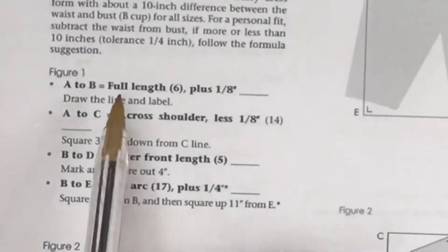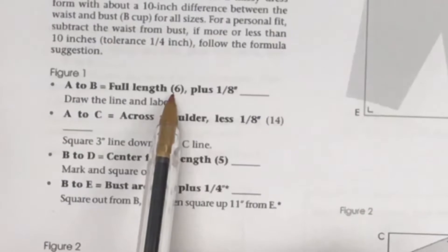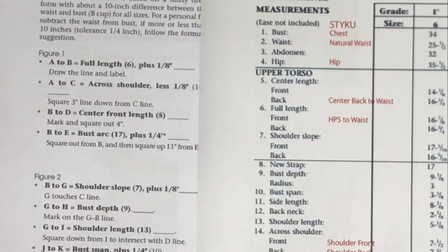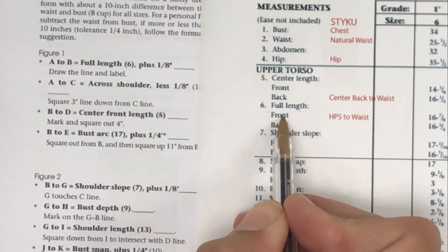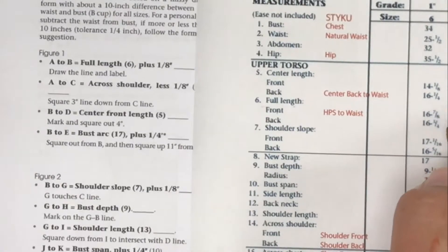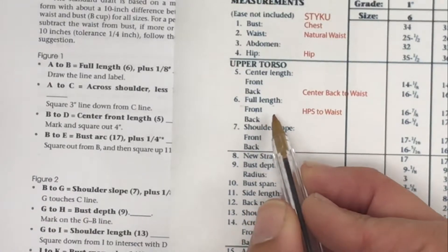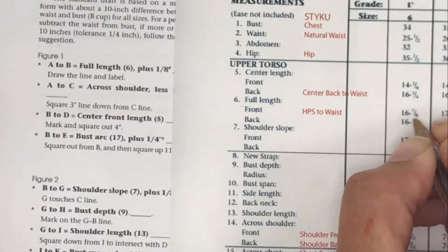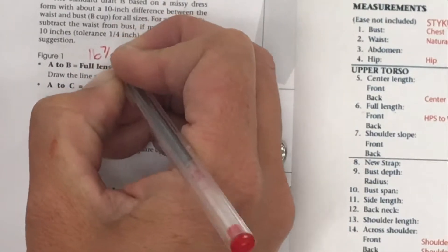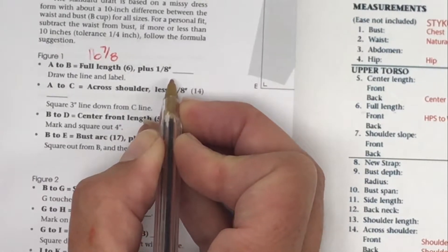Figure 1: we're going to be using the full length measurement, which is number 6. It says full length, we have front and back. We're working on the front bodice, so we want the front measurement. I'm doing size 6, which is the first column, so for me my front full length is 16 and 7/8. I'm just going to write that down: 16 and 7/8, but they want us to add 1/8 inch, so we get to do math.